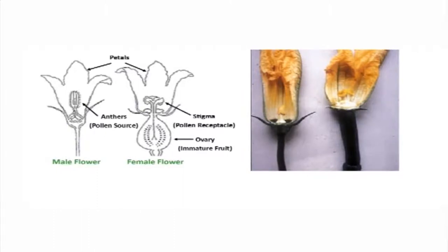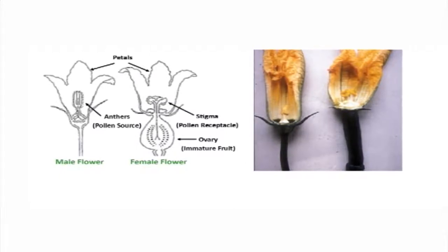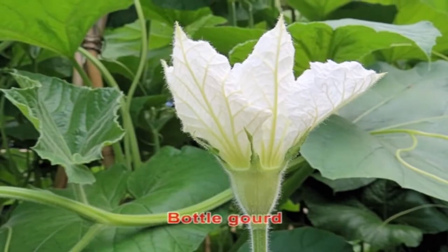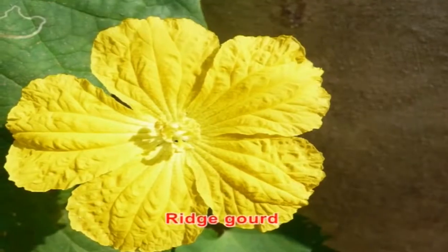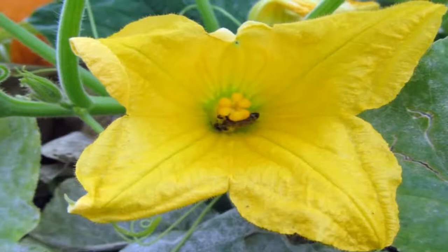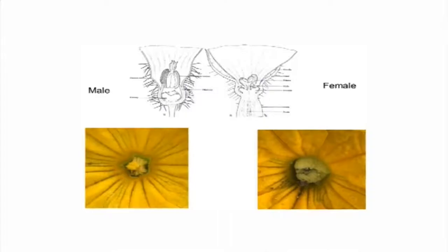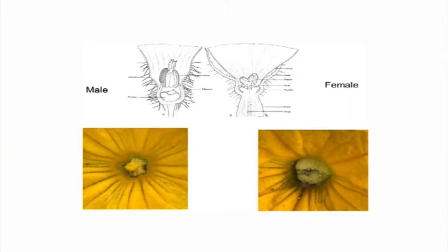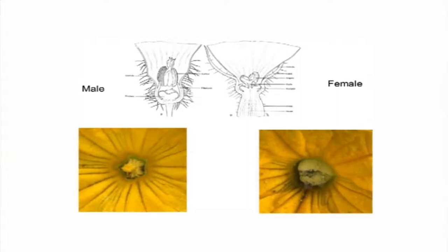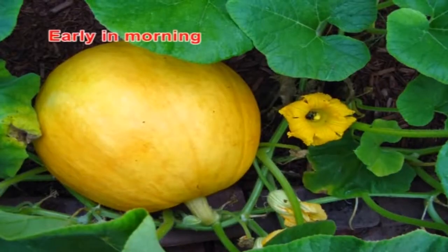Pollination is largely done by insects and cross-pollination is a rule in cucurbits. In cucurbits, the male and female flowers are borne separately on the same plant. The female flowers can be distinguished from the male flower by a knob-like structure below the flower. The flowers open early in the morning in all cucurbits except bottle gourd and ribbed gourd, where they open in the evening.